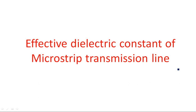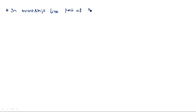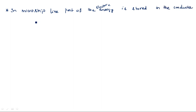In this video I am going to explain the derivation of effective dielectric constant in the microstrip transmission line. In a microstrip transmission line, part of the energy — the electromagnetic energy, the electric energy — is stored in the conductor configuration which is in the air, and some is in the dielectric.